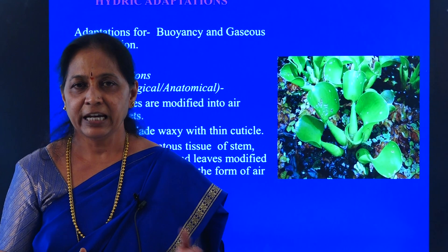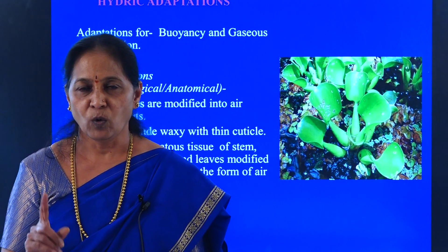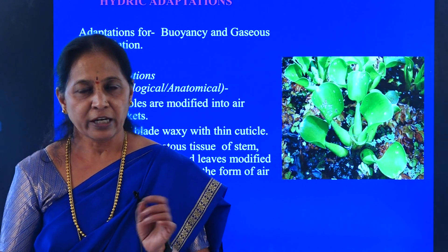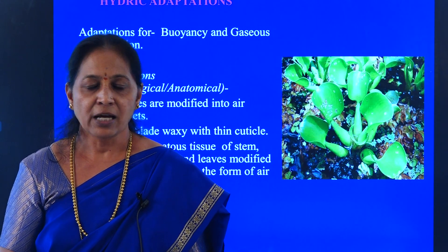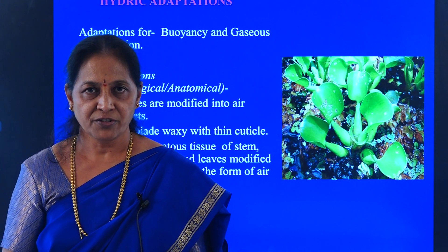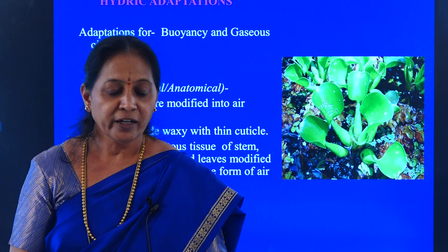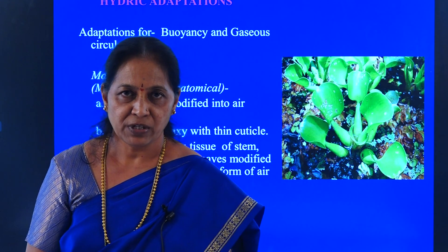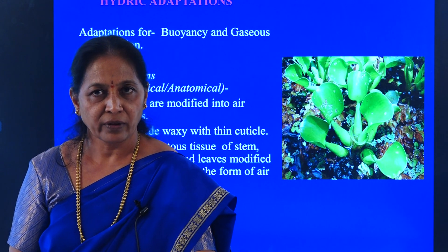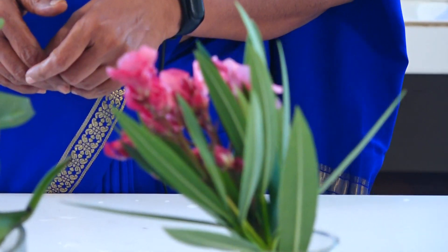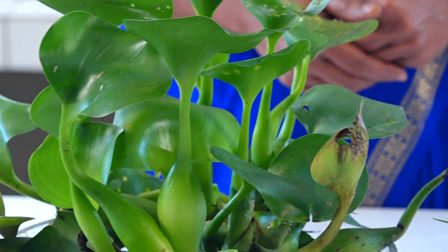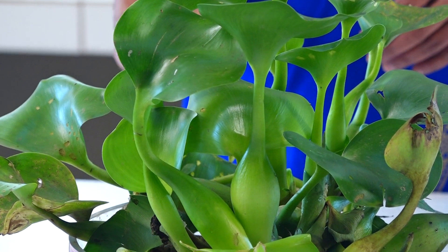So the plants exhibiting xeric adaptation include Opuntia and Nerium, and one plant showing hydric adaptation is Eichhornia. There are a number of plants which exhibit ecological adaptations. Eichhornia, or water hyacinth, exhibits hydric adaptation, while Opuntia and Nerium exhibit xeric adaptation.